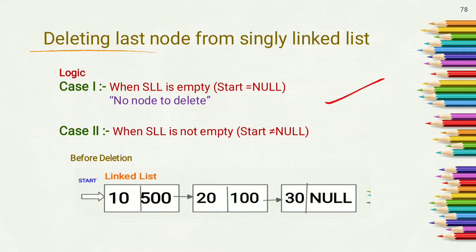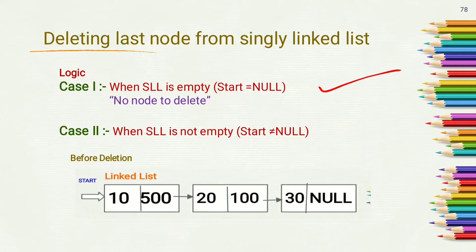Case 1: In deletion of any node, first we have to check if there is any node available in the linked list or not. When the singly linked list is empty, that means start equals to null, we have no node to delete.